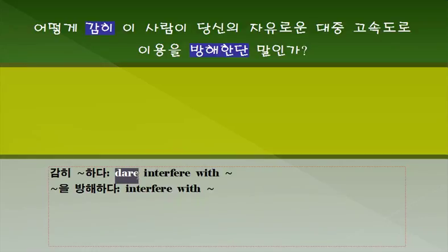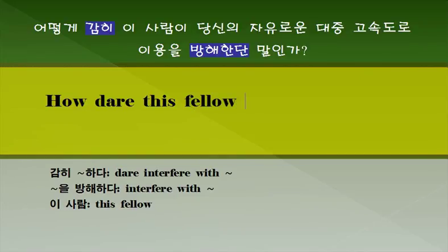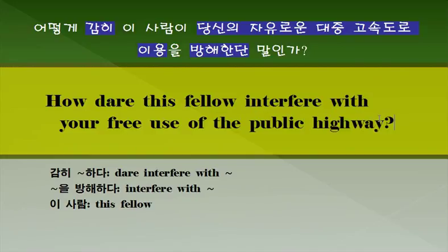'dare'가 조동사로 쓰일 수 있다는 거죠. '어떻게 감히 방해한단 말인가?' '어떻게'는 'how'라고 하는 표현을 쓸 수 있습니다. 의문문이죠. 조동사가 문장 앞으로 나가야 됩니다. 'How did?' 다음에 이 사람: 'this fellow'. 'How did this fellow dare interfere with' - 무엇을 방해합니까? 당신의 자유로운 대중고속도로 이용입니다. 'your free use of the public highway', 이렇게 우리가 문장을 쓸 수 있습니다.